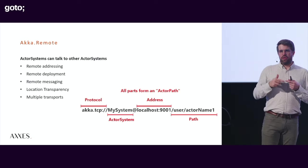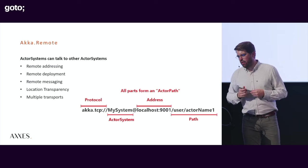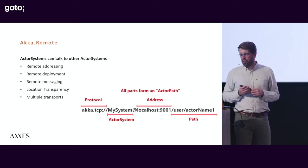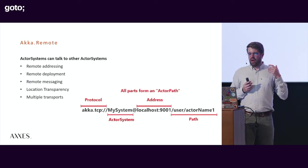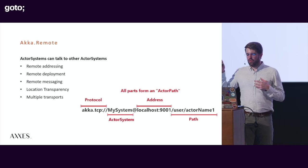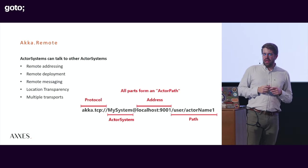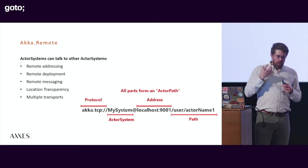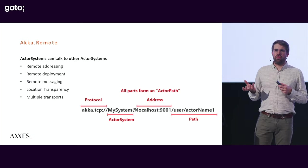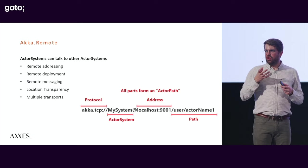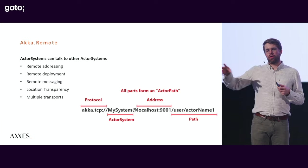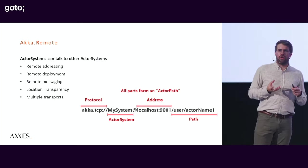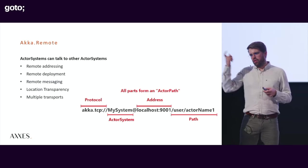The actor addressing works similarly to URLs: you have a protocol, an actor system name, a location like an IP address with a port, and the path of the actor you're talking to. This actor path can be used inside an actor reference, and actor references have something called location transparency. If you send an actor reference in a message to another actor — even if it lives in another node of your cluster or a remote actor system — the reference still works. You can pass it around inside your cluster without needing to know where the actor lives.